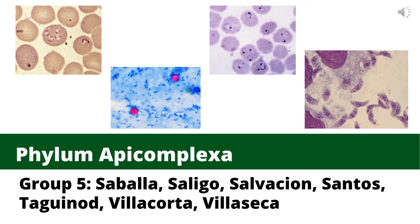Hello everyone! For today's report, our group will be focusing on the phylum Apicomplexa, specifically two genera: Plasmodium and Toxoplasma. As you can see here, these are just some of the species that can be found in this phylum. From left to right, they are Babesia, Cryptosporidium, Plasmodium, and Toxoplasma, with the last two being delved deeper into later in the presentation.